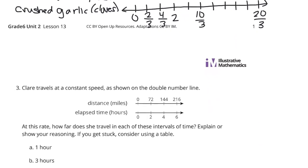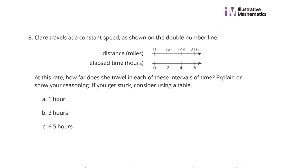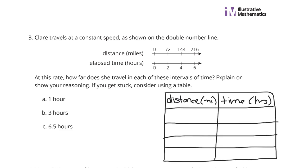Continuing on to question 3. Claire travels at a constant speed, as shown on the double number line. At this rate, how far does she travel in each of these intervals of time? Explain or show your reasoning. If you get stuck, consider using a table. Well, let's do just that. Let's create a table.